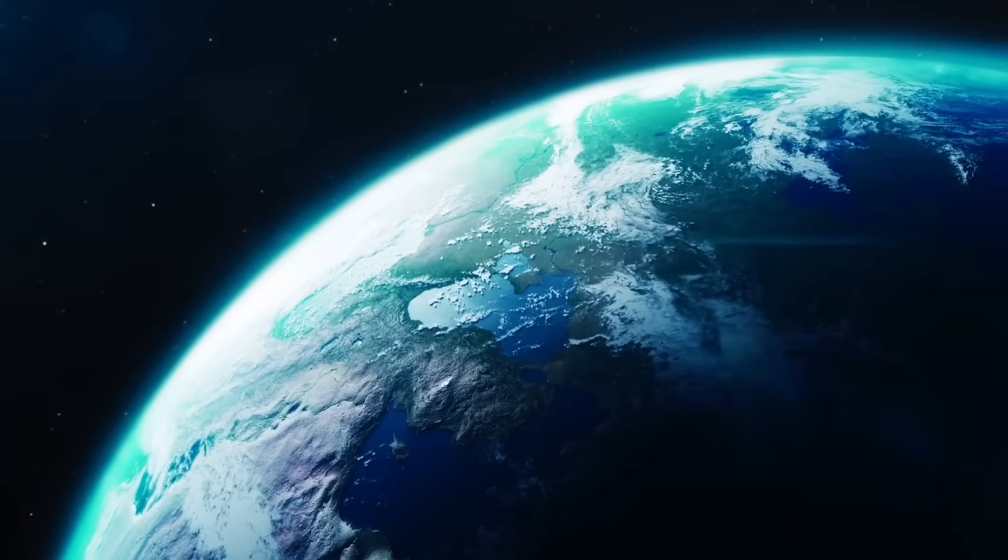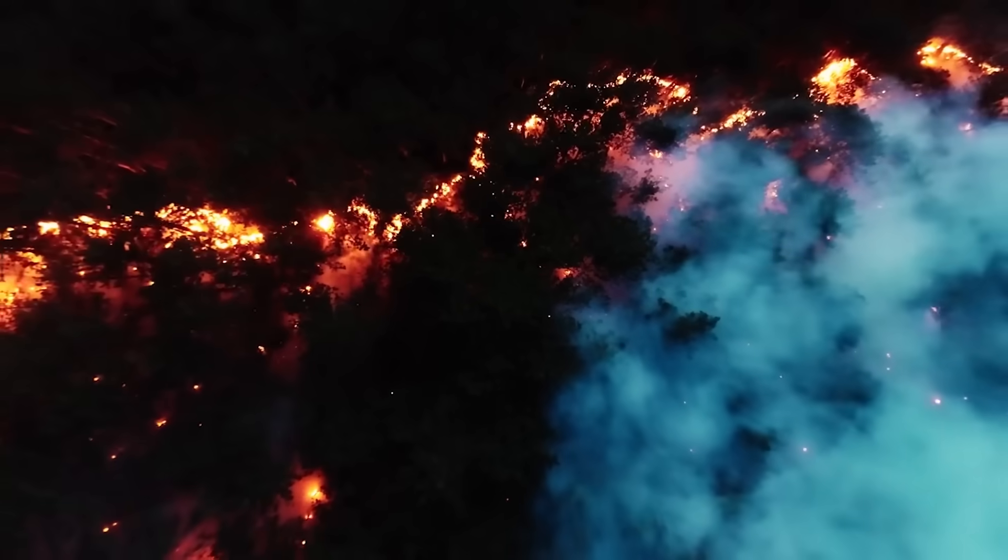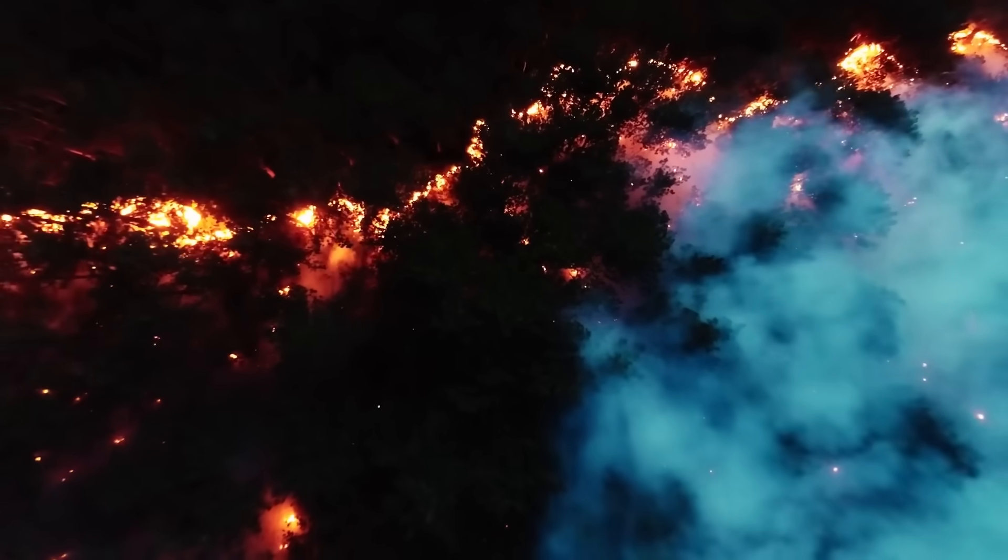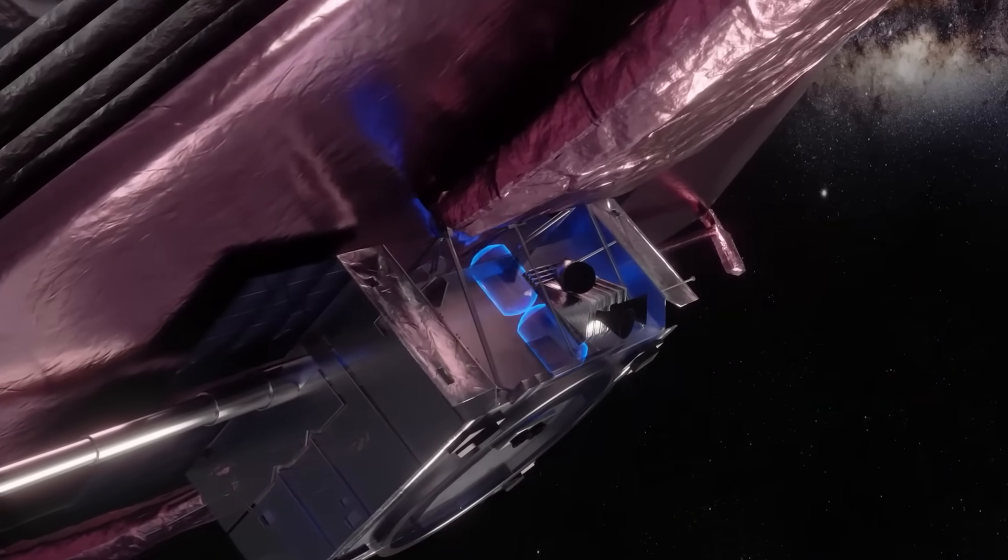More frightening than what it resembled was where it was located. The coordinates matched a cold spot in the cosmic microwave background, an area long thought to be a statistical anomaly, devoid of galaxies and stars. But now, it looked more like a lock, a vault, a geometric construct encoded into the fabric of the universe itself. And if it's a vault, what's inside it?